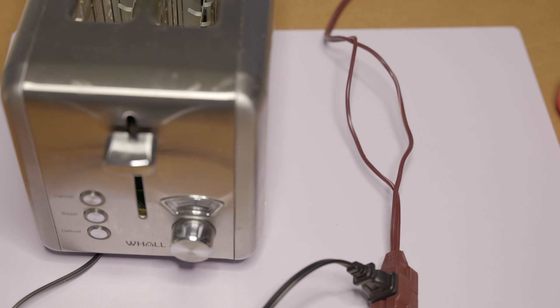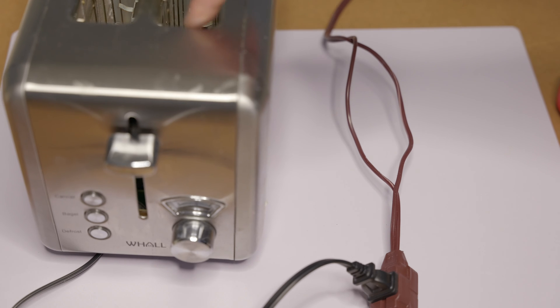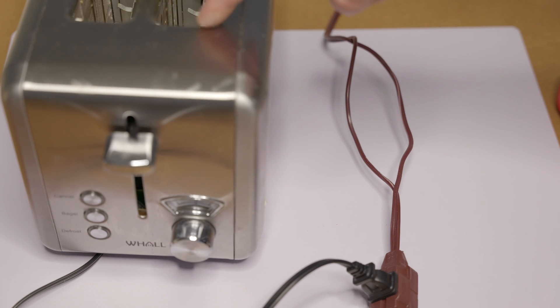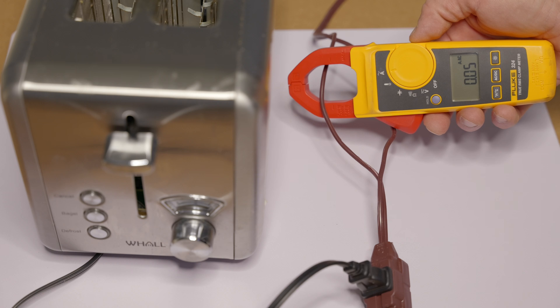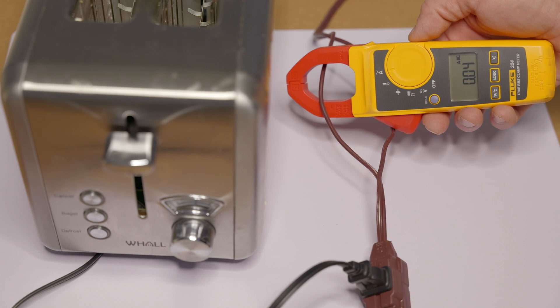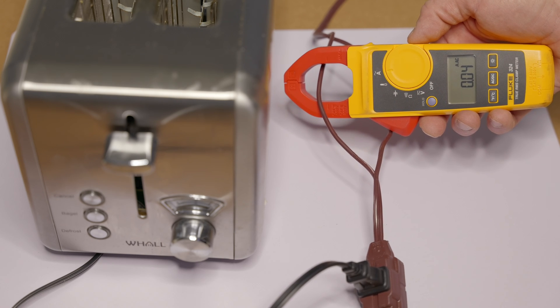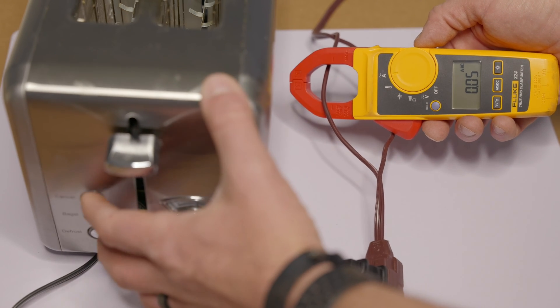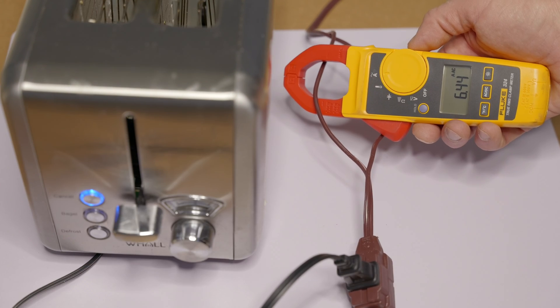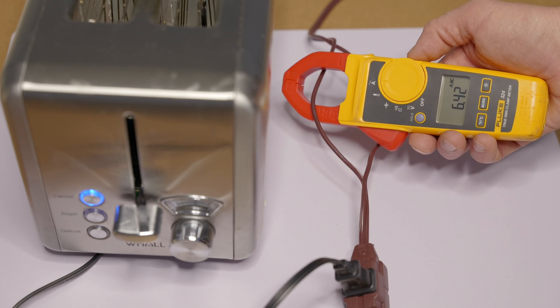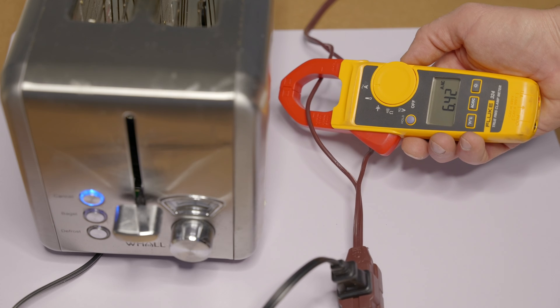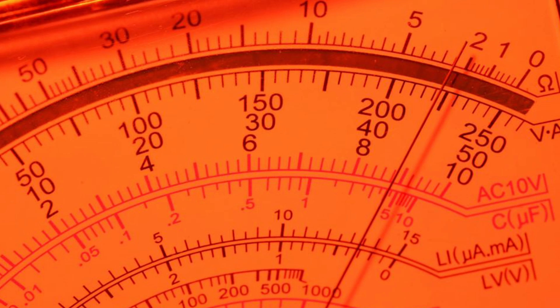Next up we have a toaster. This should pull a lot more amps. When it's powered on, it has the nichrome wires inside that heat up, and that's the part that heats up your toast. Again, we'll put it to the amps AC setting. With it powered off, we're not really using any amps. It's just plugged in right now, so it's not doing anything. Now let's go ahead and turn it on. As you can see, it immediately jumped up to 6.42 amps AC. It uses quite a bit more amps than the iPad charger.